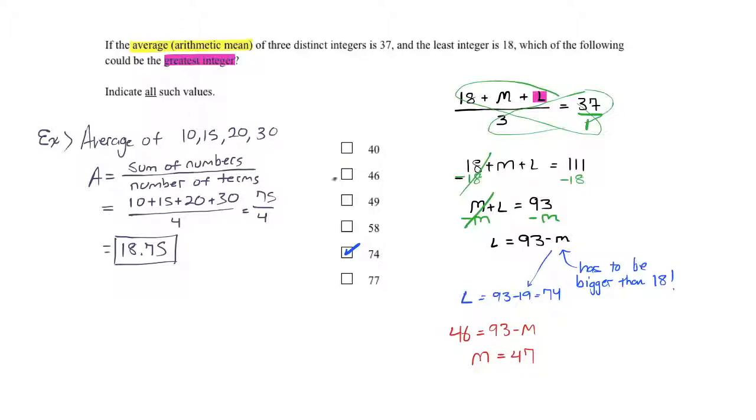So hopefully we're convinced by now that 49 is allowable. And if 49 is allowable and 74 is the upper limit, then 58 would be allowable too. Right, I'll just prove, of course, that 49 is good. What if the result is 49? What if the hypothetical largest number in this list is 49? What number would you have to subtract from 93 to get there? 49 minus 93 would be 44. And this is okay, as long as the middle number is smaller than the greatest number.